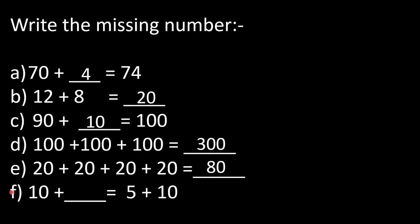Part F: 10 plus dash equals 5 plus 10. This is a change of order. On the right side we have 5 and 10; on the left side 10 is already given. So the missing number is 5.